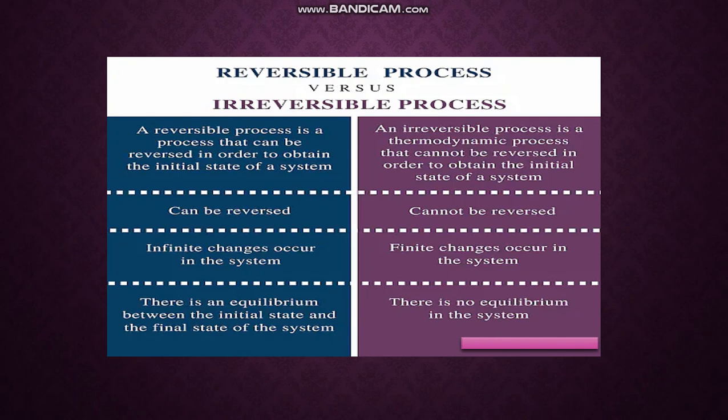The major differences between reversible and irreversible processes: a process which can be reversed is a reversible process; one which cannot be reversed is irreversible. In a reversible process, infinite changes occur in the system, whereas in an irreversible process, finite changes take place. In a reversible process there is equilibrium between the initial and final state, while in an irreversible process there is no equilibrium.